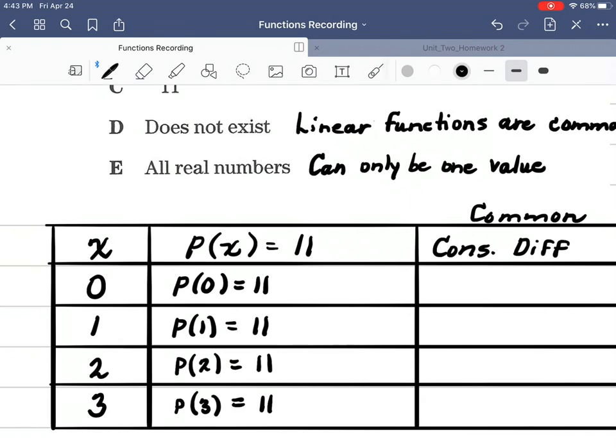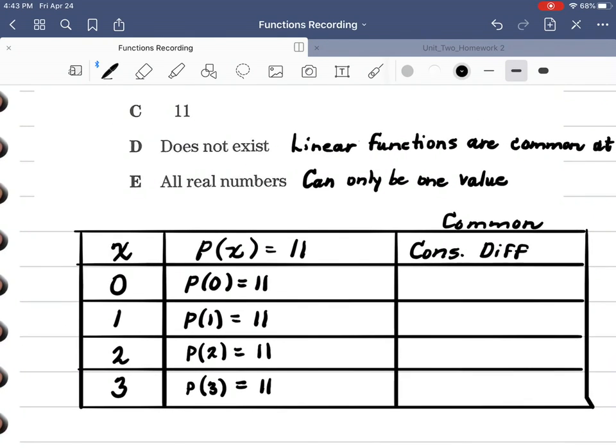A lot of folks would stop right here and say, okay, that's the answer, it's got to be C. But it isn't, because look at this. When you do the consecutive difference, remember you're bringing this 11 up, taking away that first one to get 0. You're bringing this 11 up, taking away that second row to get 0. So the common consecutive difference is 0.